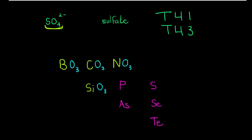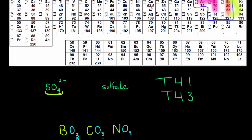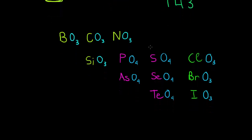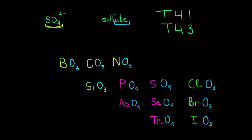Each one of those elements gets four oxygens because they are in the 4. Then we get the next three in line with the 4: chlorine, bromine, and iodine. Each one of them also gets oxygen — specifically three oxygens — and that is why it might be better to call the system T43.